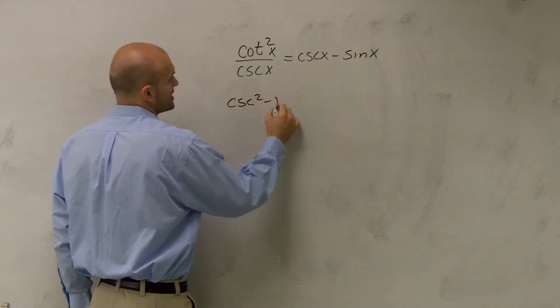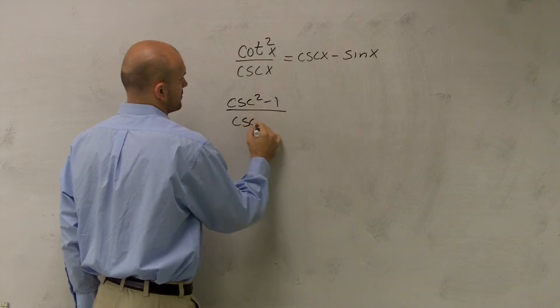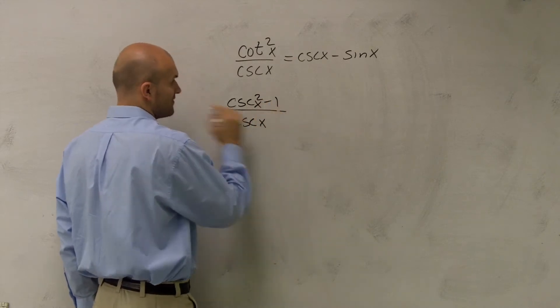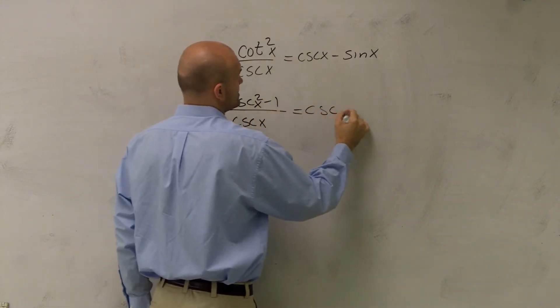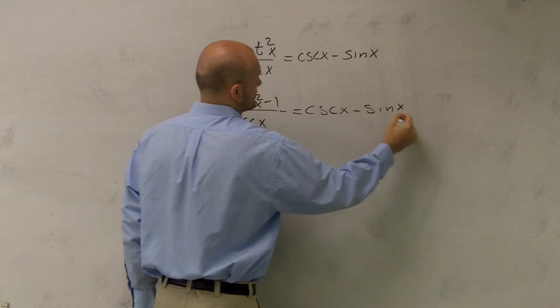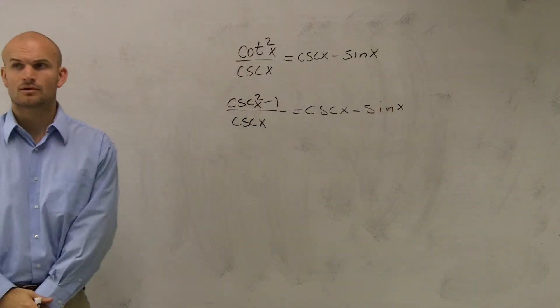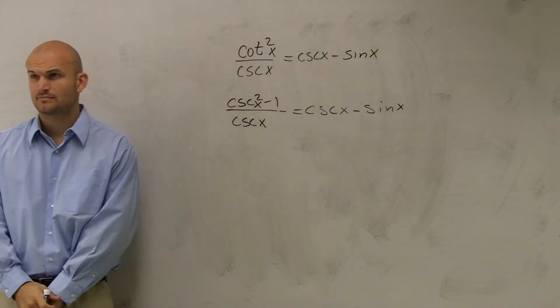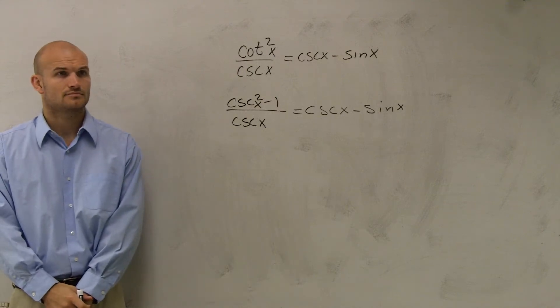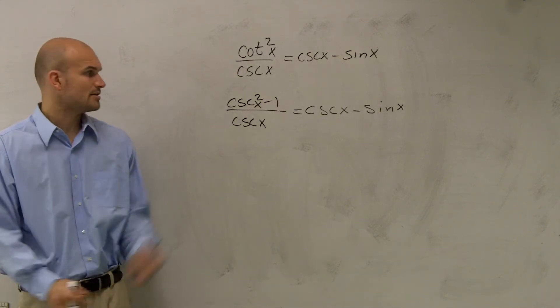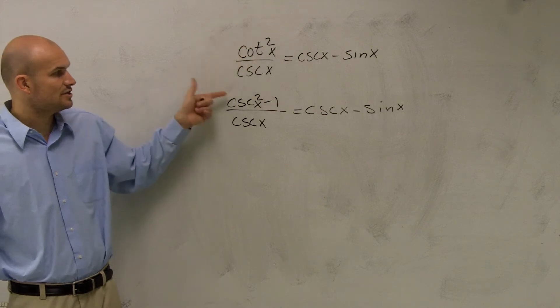So I write (csc²x - 1)/cscx = cscx - sinx. Right? Everybody see what I did? Sam, see this? All I did is, I know that cotangent equals that, right?